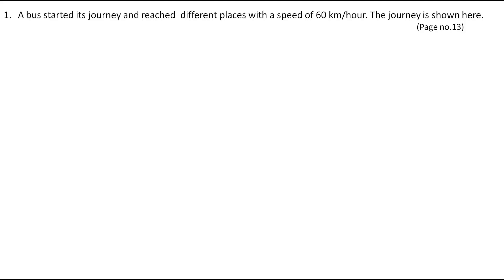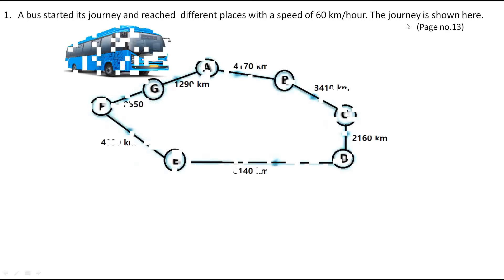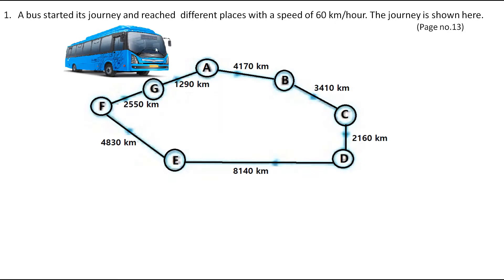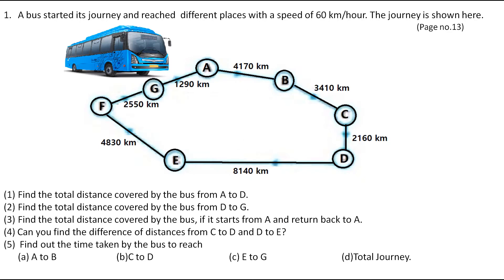On page number 13 you have the question: a bird started its journey and reached different places with a speed of 60 km per hour. The journey is shown here. The bird starts its journey from A and it reaches some different destinations. They have given the distance between them and we have to solve some questions. Let's solve these questions one by one.